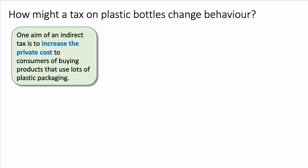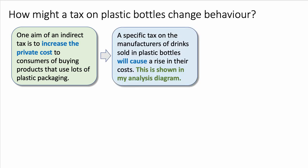One aim of an indirect tax is to increase the private cost to consumers of purchasing products that use lots of plastic packaging — for example, increasing the private cost of people who buy a bottle of mineral water to take to the gym or on the way to work. A specific tax on manufacturers of drinks — don't forget this will be a tax on the manufacturers initially — will cause a rise in their costs. This is shown in my analysis diagram. Look at the colour coding here: 'increase the private cost' signals relevant concepts; 'specific tax' rather than a percentage tax; 'will cause' invites theoretical relationships. Flag up neatly in your exam that an analysis diagram is on the way.